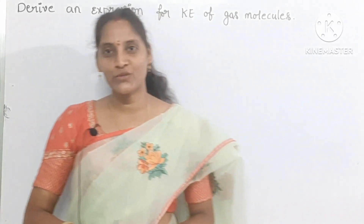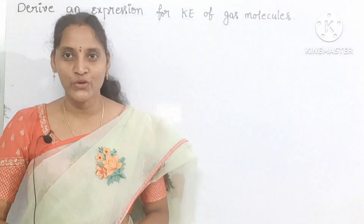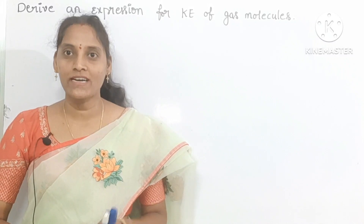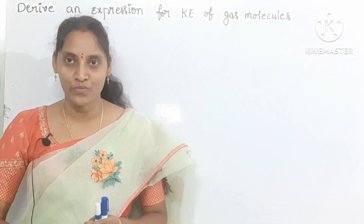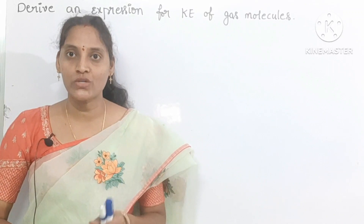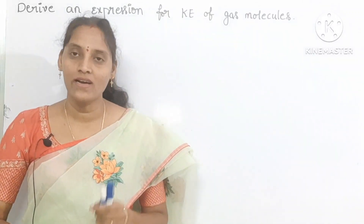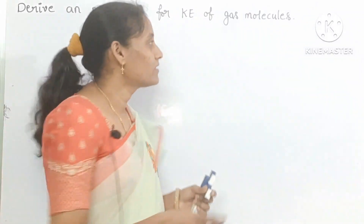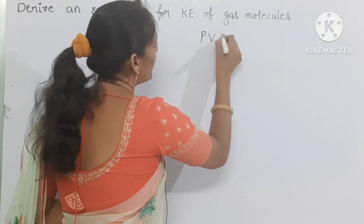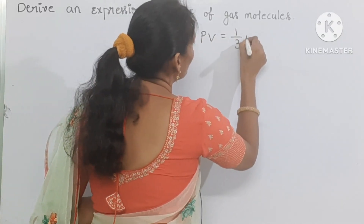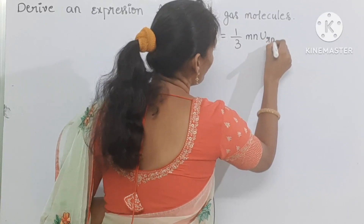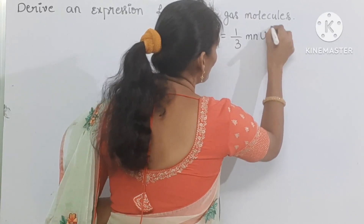Hi students. In today's class I am going to explain about deriving an expression for kinetic energy of gas molecules. To derive this equation we should first take the kinetic gas equation. The kinetic gas equation is PV equal to 1 by 3 M N U_rms squared.